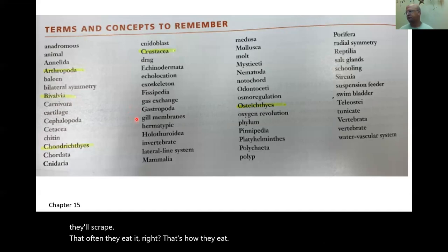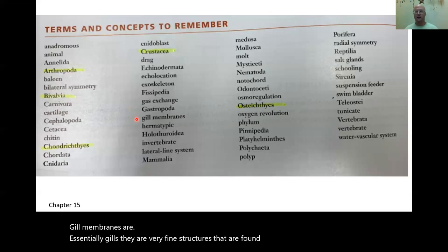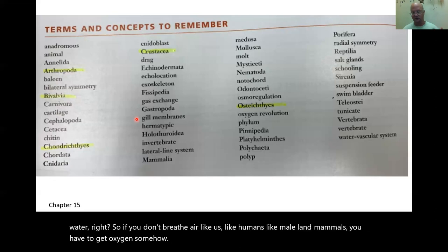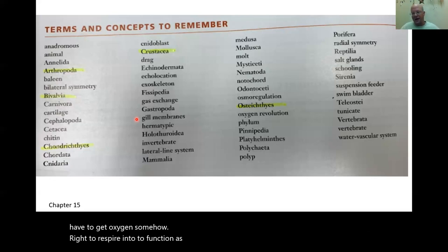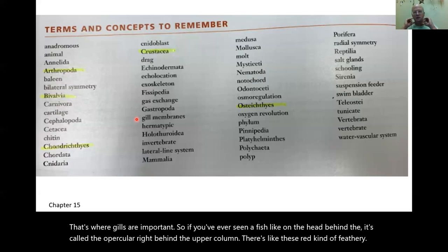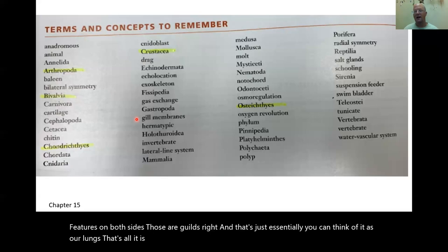Gill membranes, essentially gills, are very fine structures found in all animals that live in water. If you don't breathe air like land mammals, you have to get oxygen somehow. On a fish, behind the operculum, there are red feathery features on both sides — those are gills. You can think of them as the fish's lungs — they exchange gas in the water and that's how the fish gets oxygen.